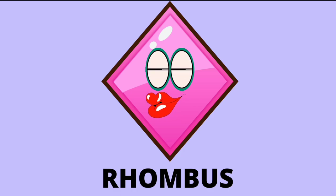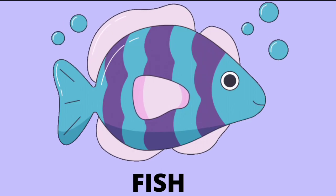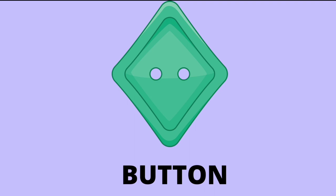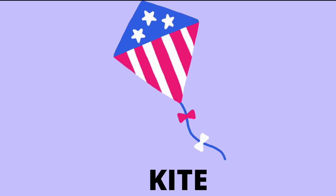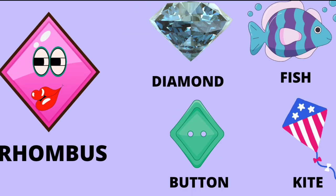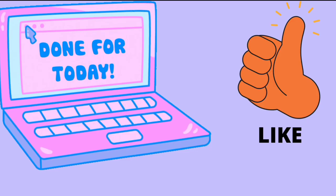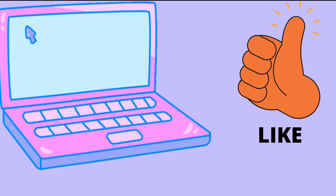Shape: rhombus. Diamond: rhombus. Fish: rhombus. Button: rhombus. Kite: rhombus. Shape rhombus — diamond, fish, button, kite. That's all for today. Please like the video.